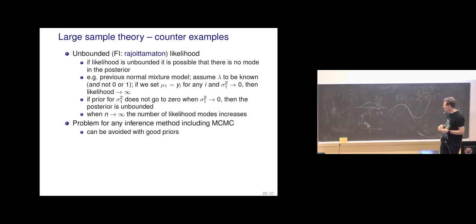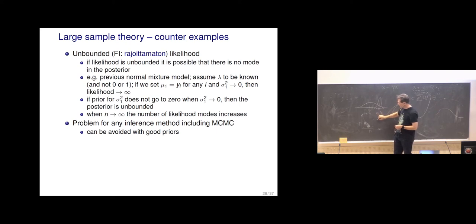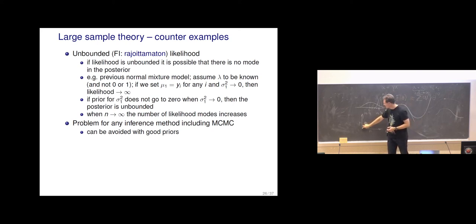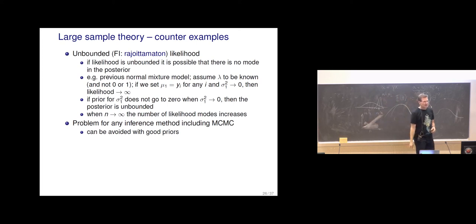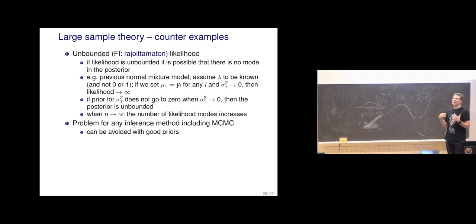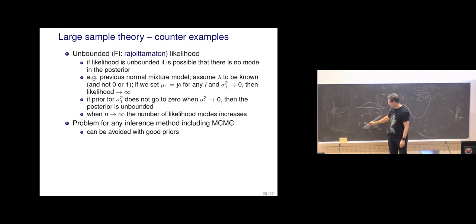For mixture models, to remove aliasing people have proposed ordering constraints, such as requiring mu-1 < mu-2. This removes the aliased mode, but when we have more mixture components these orderings are not necessarily sufficient — there can still be bow-tie or half-bow-tie distributions. Mixture models are difficult to do exact Bayesian inference on.